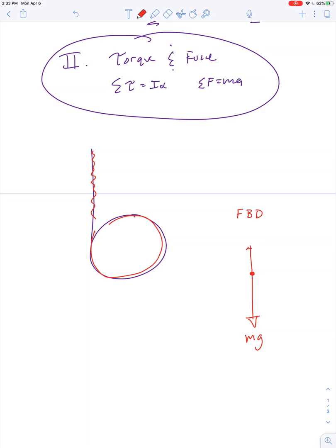Look at the length of my vectors. I intentionally made the downward vector longer than the upward vector because I know this system is going to accelerate in the downward direction. The upward force is just the tension in the strap. So the net force is equal to Mg minus T. So Ma equals Mg minus T.